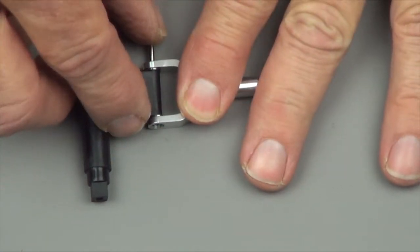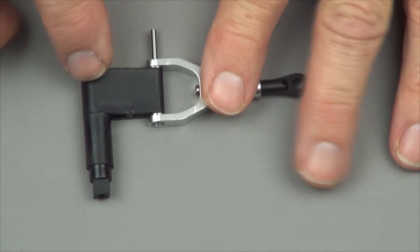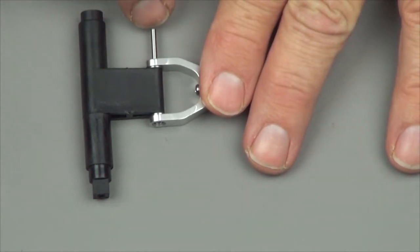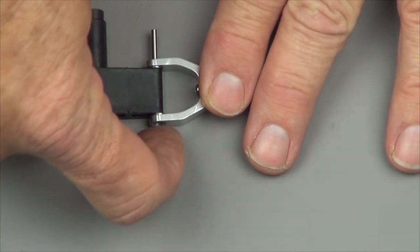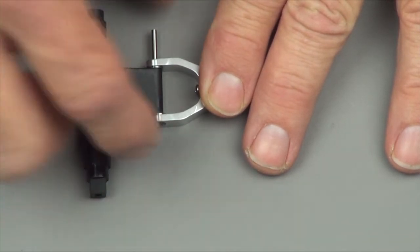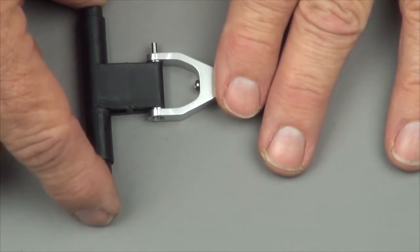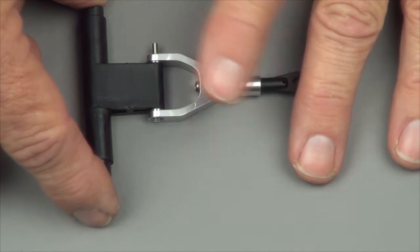The other thing about this pin, I recommend you put some thread lock, probably the green type, on the outside edge and then use a toothpick to put some on the inside of the other side when you push it through. This doesn't fit so tight that I'm not so sure it can't vibrate out.